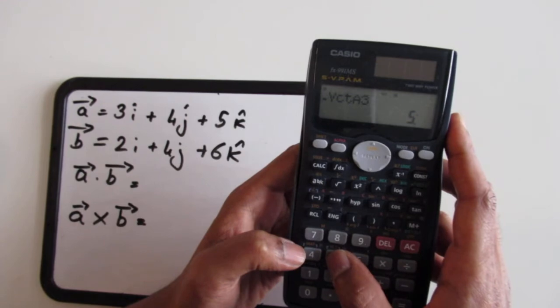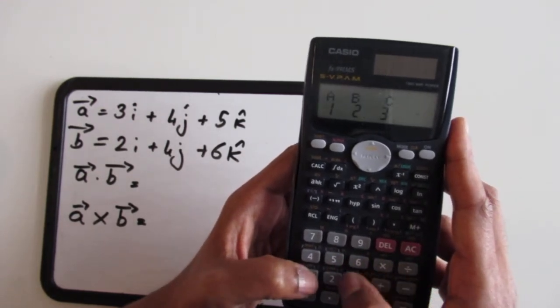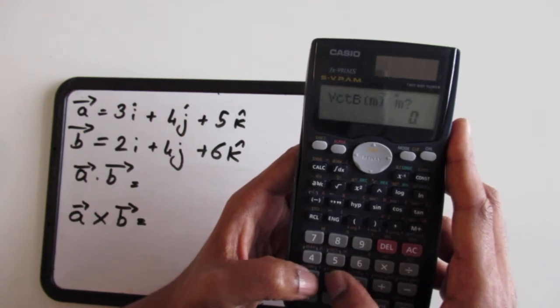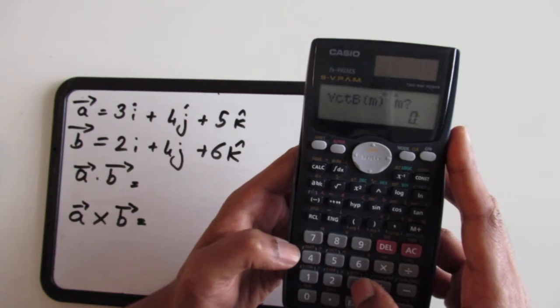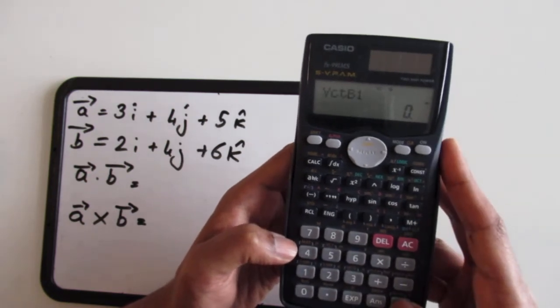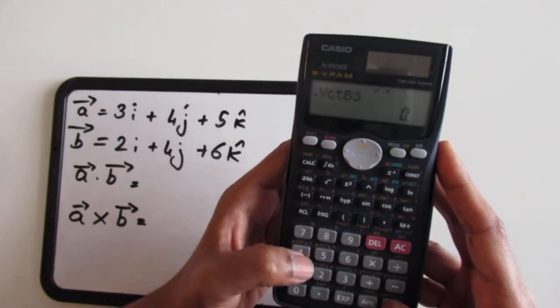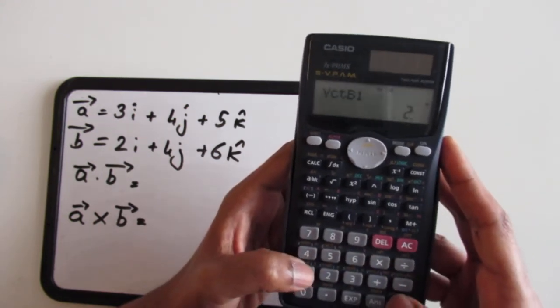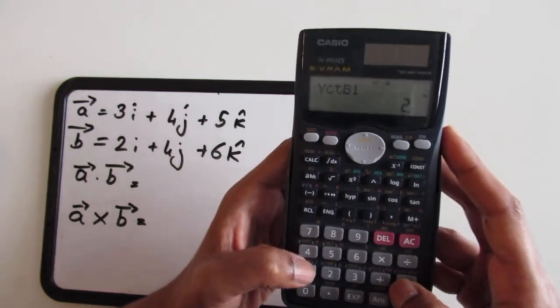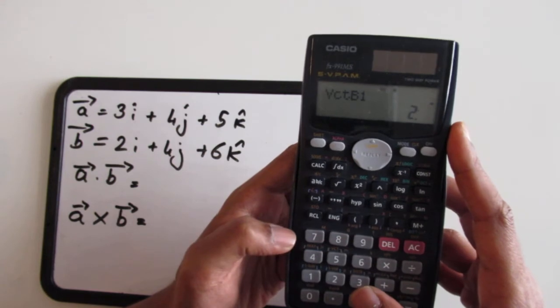I'm going to do it the same way: shift and press 5, press dimensions, I select vector B by clicking 2, and vector B is also going to be a three-dimensional vector and it's going to be 2i plus 4j plus 6k. So vector A and vector B are inputted in the calculator memory.